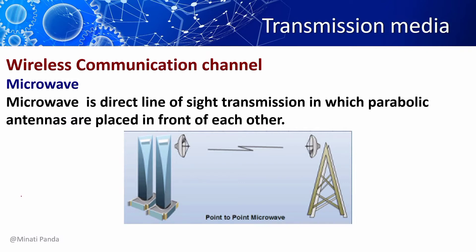Microwave is a direct line-of-sight transmission in which parabolic antennas are placed in front of each other. It consists of a transmitter, a receiver, and the atmosphere. In microwave communication, parabolic antennas are mounted on towers to send a beam to other antennas tens of kilometers away. The higher the tower, the greater the range. With a 100-meter high tower, distances of 100 km between towers are feasible.